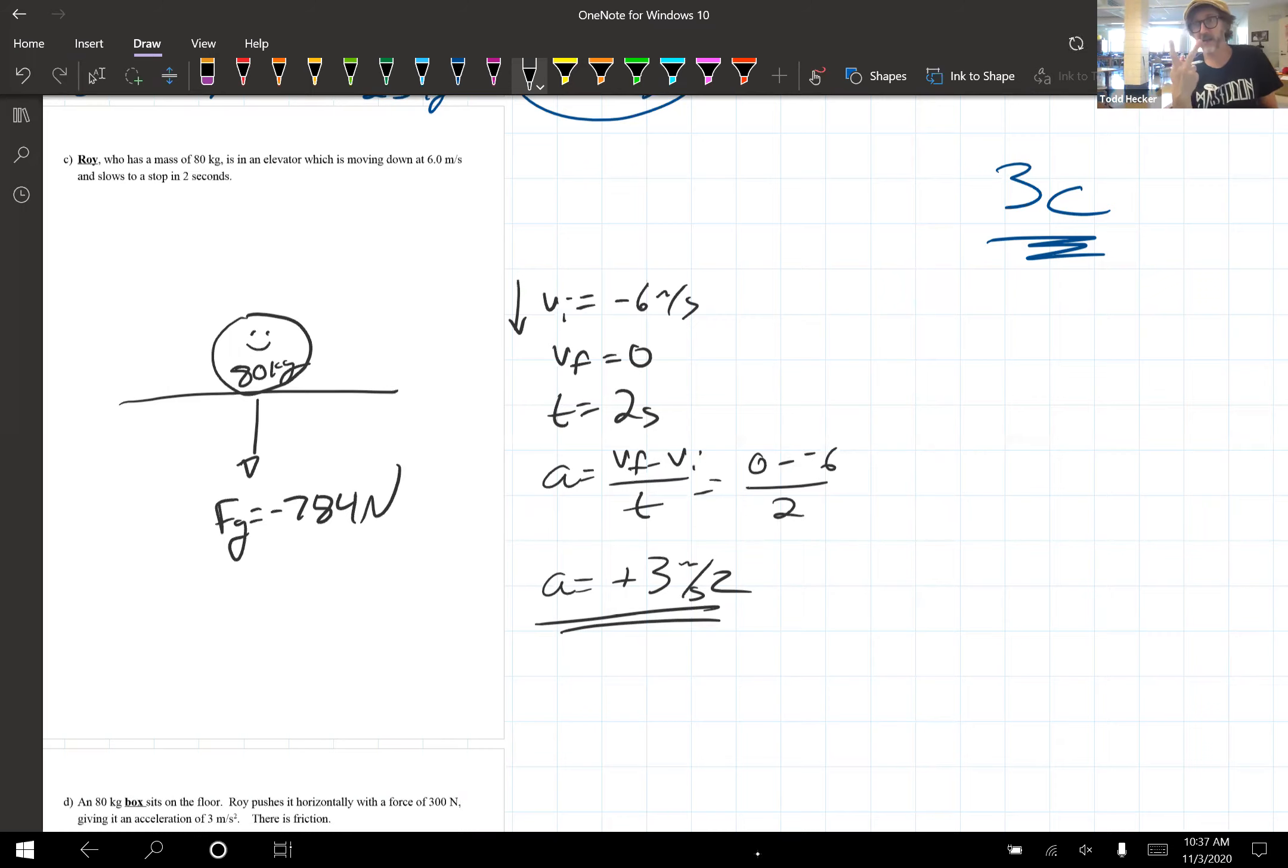So remember, there are two ways to calculate net force. You can do mass times acceleration or add up all of your forces. Here, I know my acceleration, so let's start with that. Let's find our net force. So Roy's mass was 80 kilograms. Acceleration is positive 3 meters per second squared. Multiply that out and you get 240 newtons. Now, here's the next question.